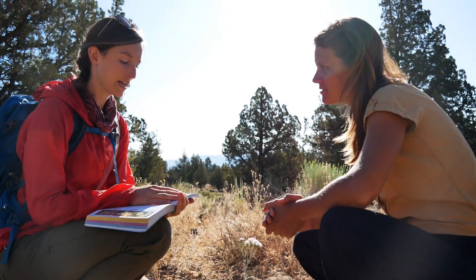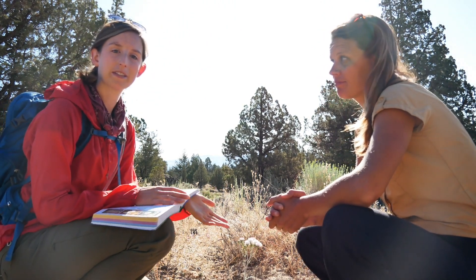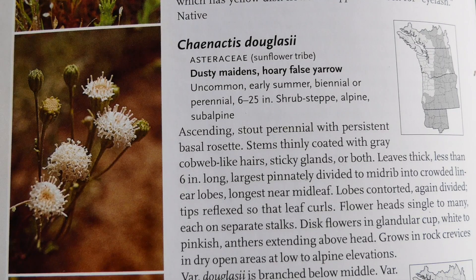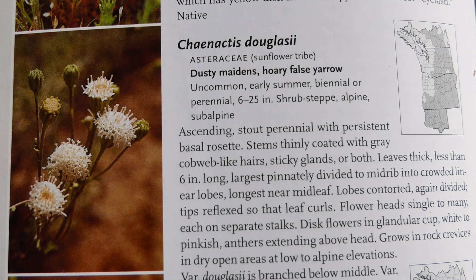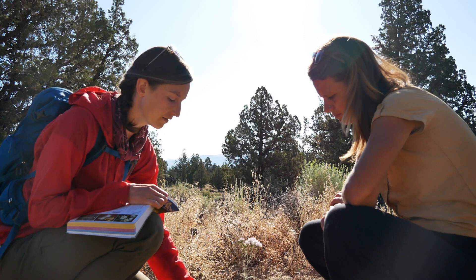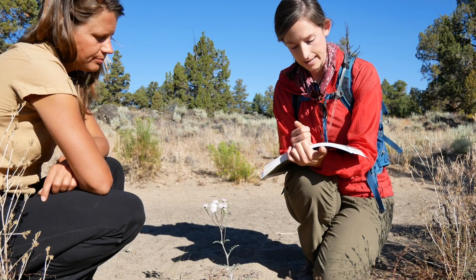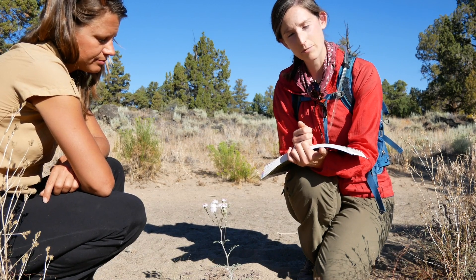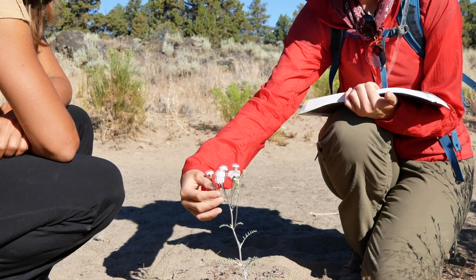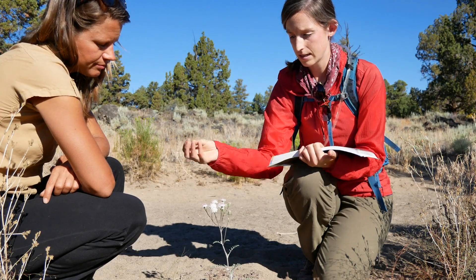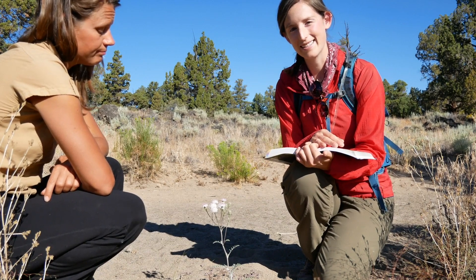This is Chaenactus douglasii, also known commonly as dusty maidens. Looking in the book, it says it has a perennial persistent basal rosette, meaning these leaves around the base of the flower are there all the time. The description also notes flower heads single to many, each on separate stalks — each of those little stalks is a big cluster of flowers, and that's how we know this is dusty maidens.